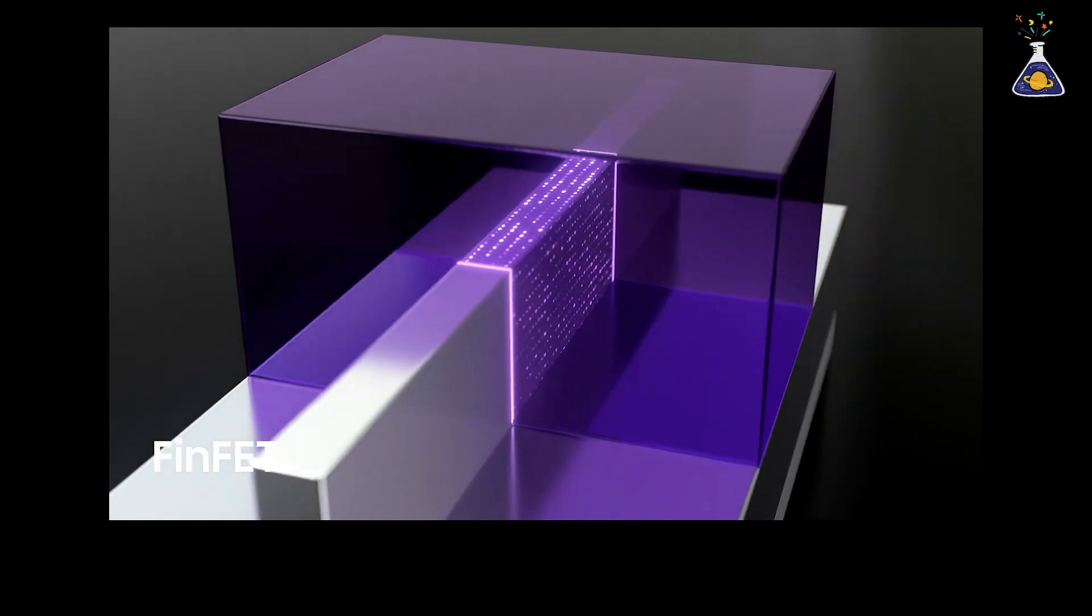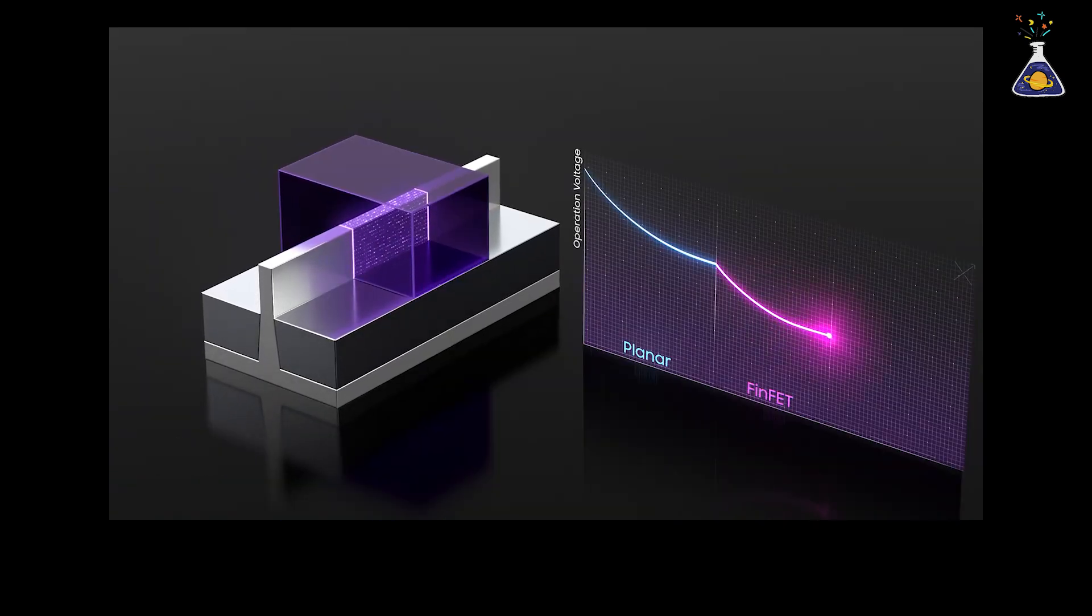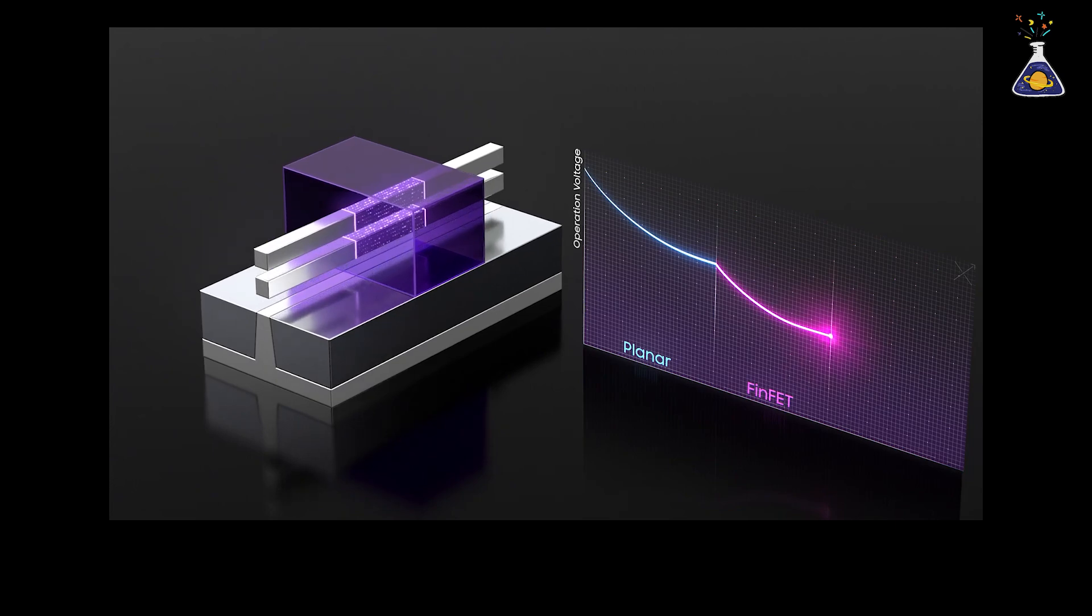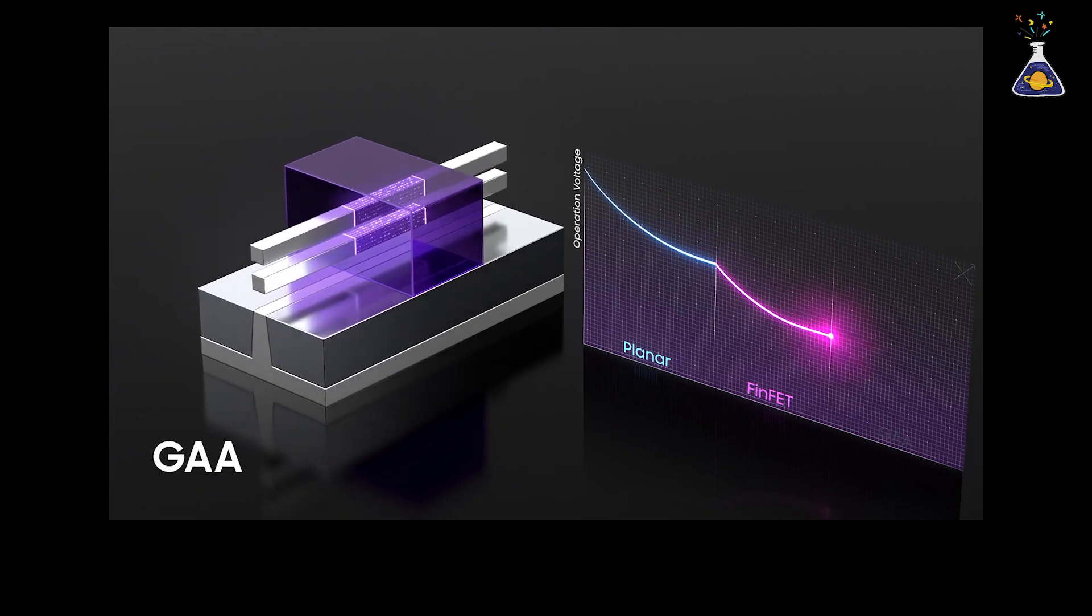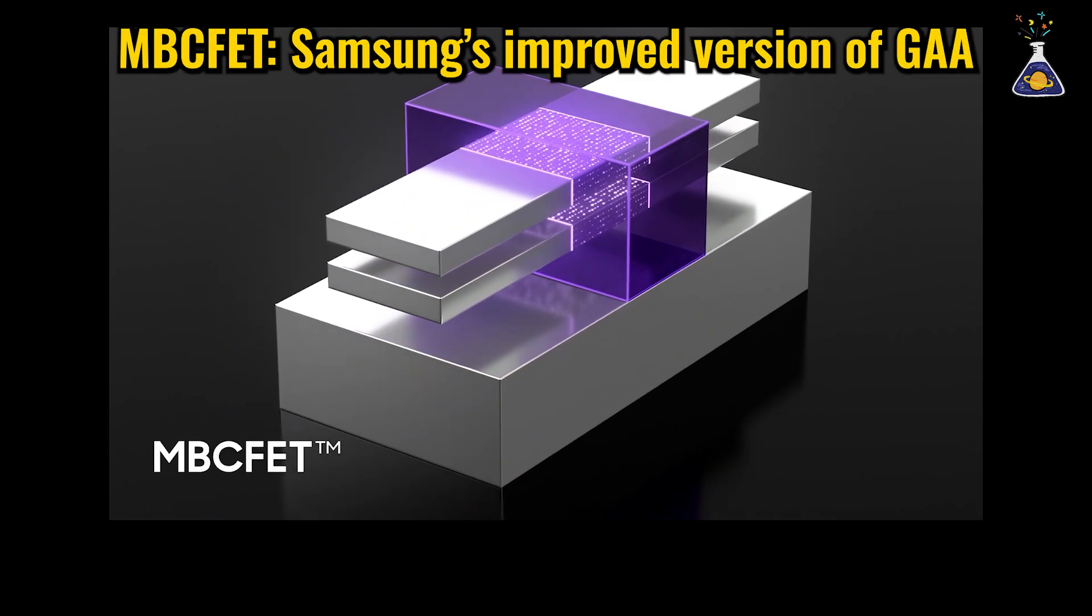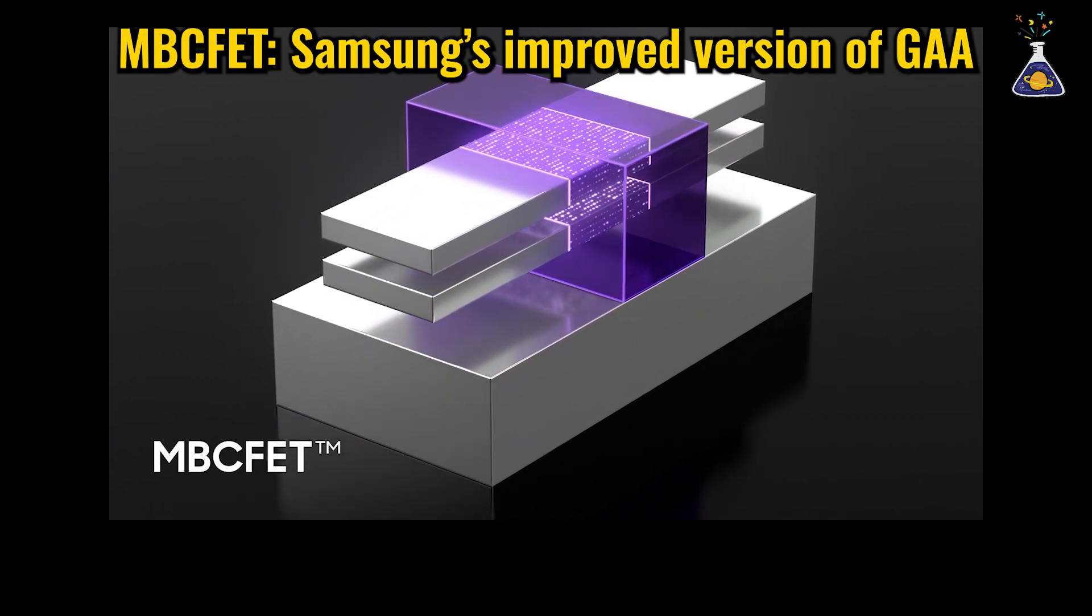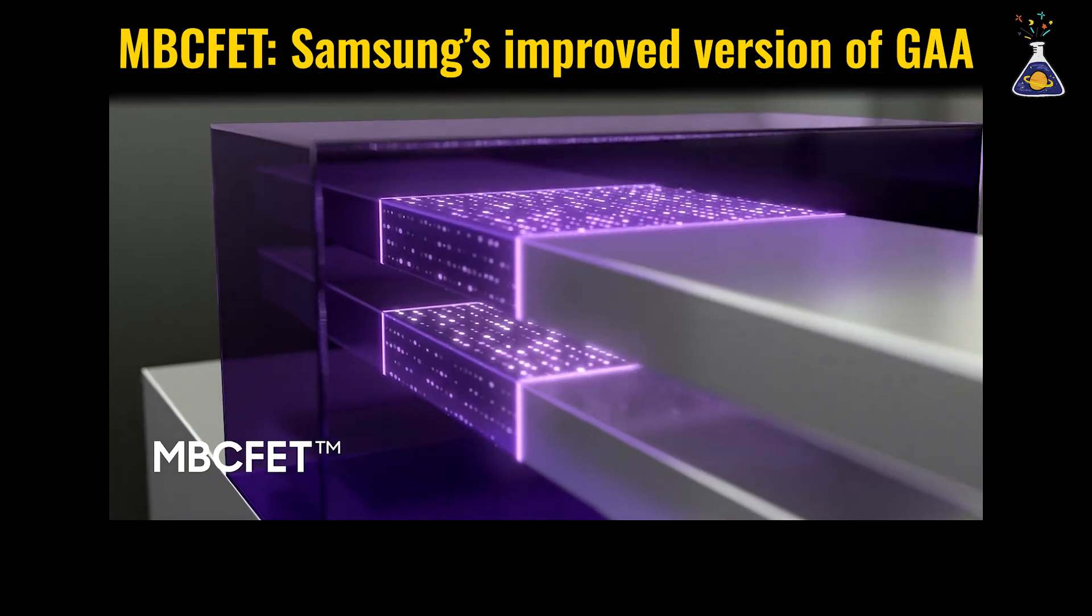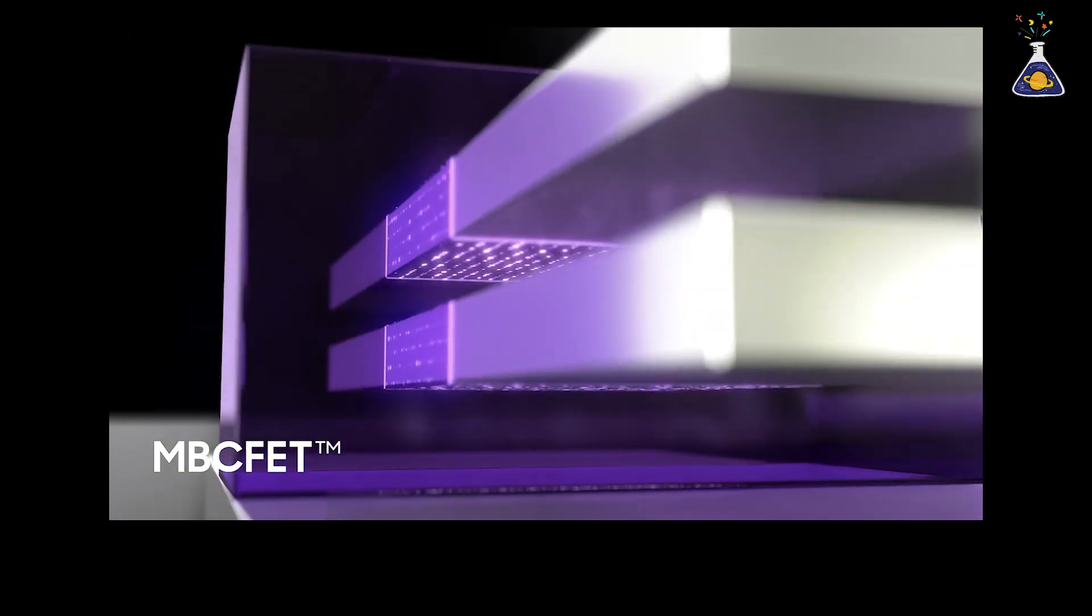To combat quantum tunneling, Samsung introduced a new approach starting with the 3-nanometer process, replacing the traditional FinFET design with gate-all-around technology. GAA transistors encapsulate the current carrying channel on all sides. It's like enclosing the channel in a tunnel to prevent current leakage.